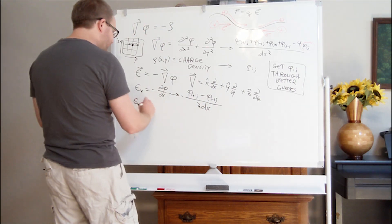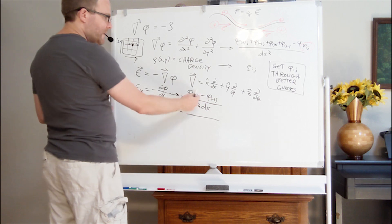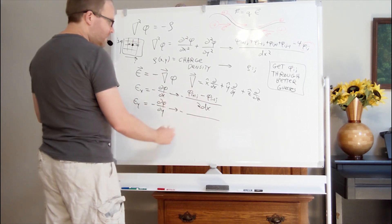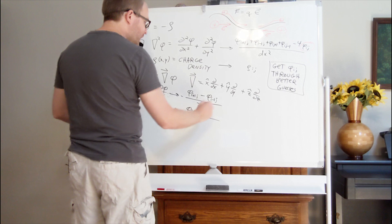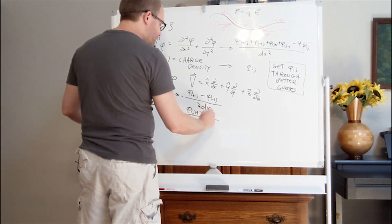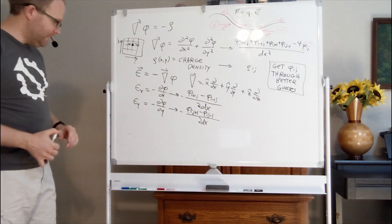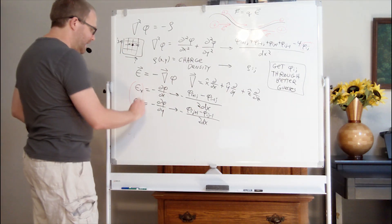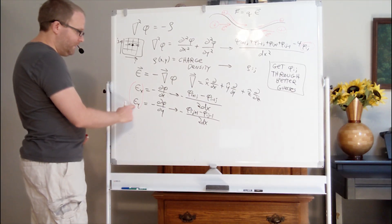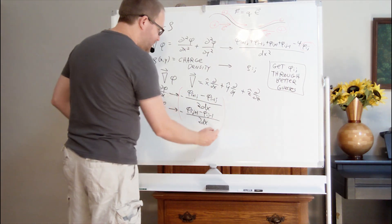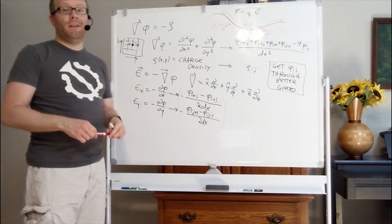We do the same thing for Ey, which is negative d-phi/dy. It's a derivative, this time changing y instead of x, so we change the j's instead of the i's. We'll have phi above — phi at i,j+1 — minus phi below — phi at i,j-1 — divided by two times the step size. Since this is a vector, we store these components separately. The zeroth element is Ex, the first element is Ey. We store them in an array and we'll have our electric field vector, which we can turn into an arrow to display the electric field everywhere.